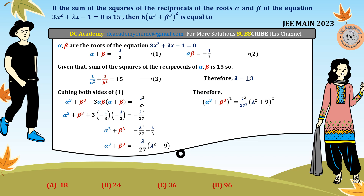We substitute λ² = 9, so (α³ + β³)² evaluates to 4. Therefore 6 times the required expression equals 6 × 4 = 24. Option B is the correct answer. It's a very simple problem — we just have to do the calculation a little bit cautiously.